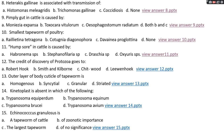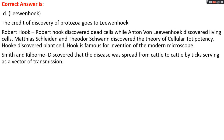Question number twelve: the credit for discovery of protozoa goes to option A, Robert Hooke; options B, Smith and Kilborne; option C, Schleiden; options D, Leeuwenhoek. The right answer is option D, Leeuwenhoek. Protozoa are unicellular organisms; credit for their discovery goes to Leeuwenhoek. Robert Hooke discovered dead cells, while Leeuwenhoek discovered living cells. Schleiden and Schwann gave the theory of cell totipotency — that one cell can produce another cell. Hooke also discovered plant cells and is known for inventing the modern microscope. Smith and Kilborne discovered that protozoal diseases — babesiosis, theileriosis, and anaplasmosis — are transmitted by ticks as vectors.